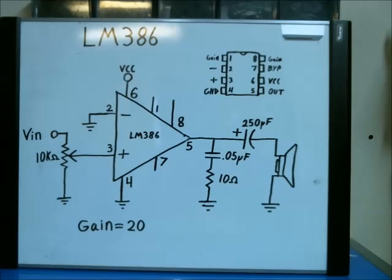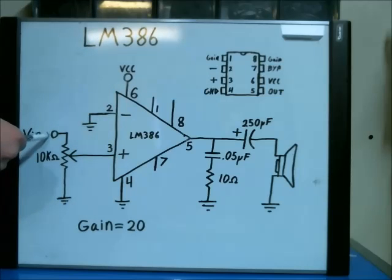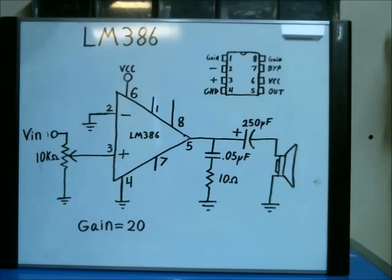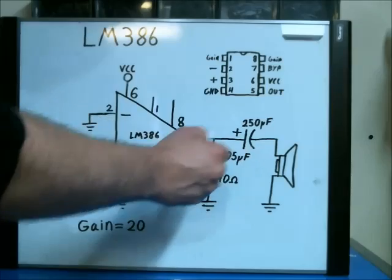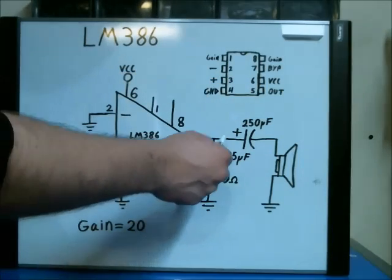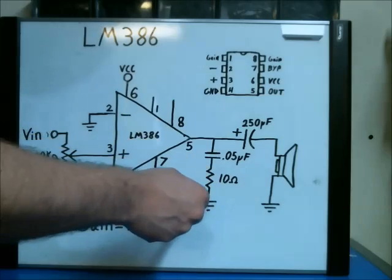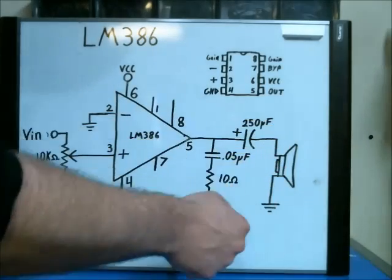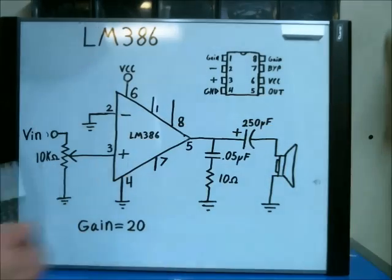Alright, so here's the schematic of the circuit I just built. Here is where you attach your audio input or the signal in. And then here's the output pin, pin 5, so right here. And I have that going through a filter and out to the speaker. This is to remove the DC offset.